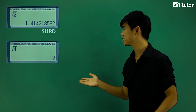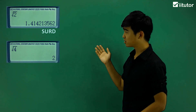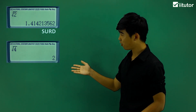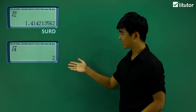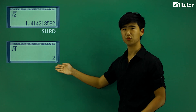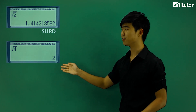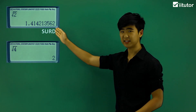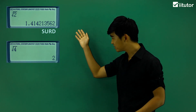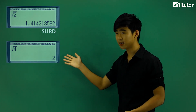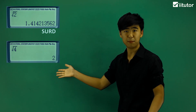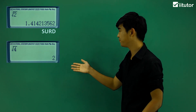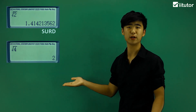Let's have a look at this. We have the square root of 4, and it just simply gives me 2. It's not endless like this, so if it's simply just a number, then this is not a third.